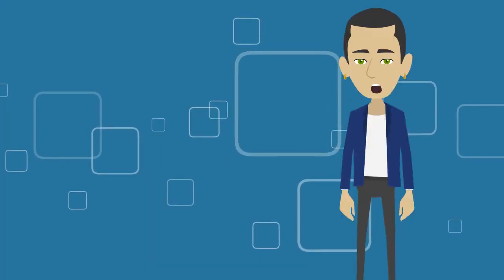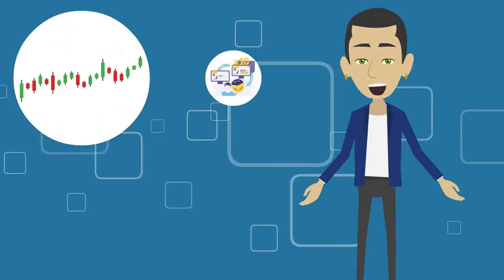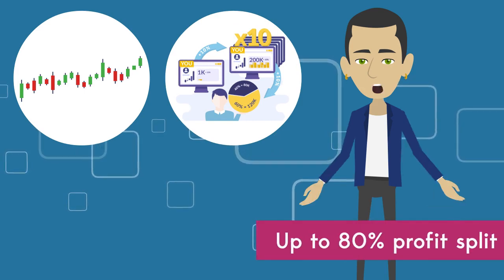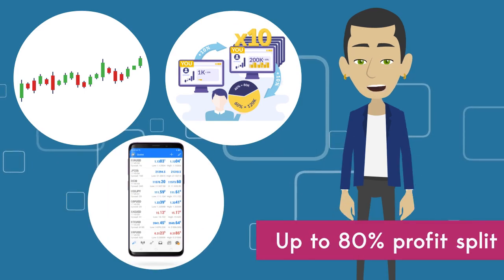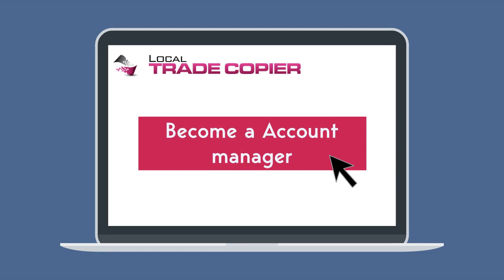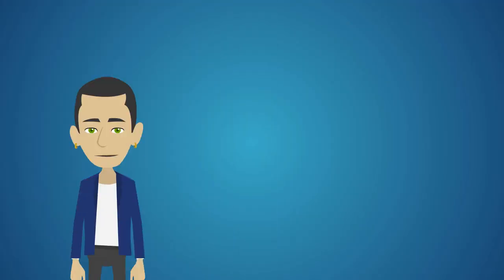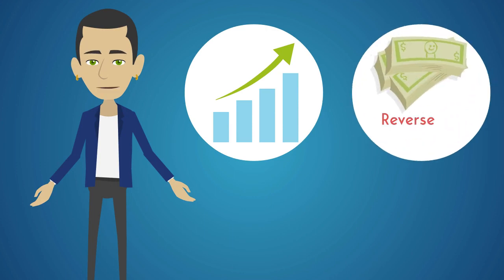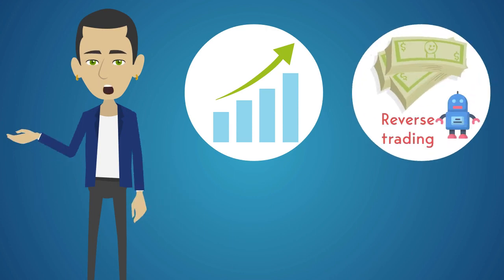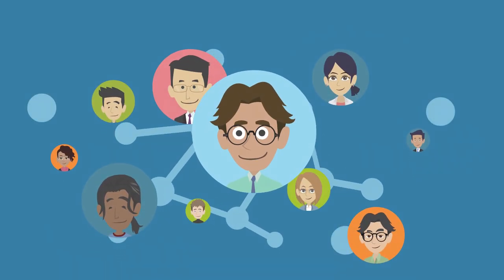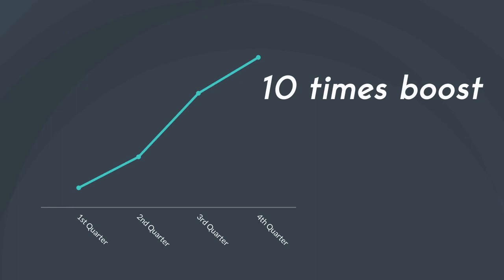We also bring the explicit option for you to trade Forex on multiple prop firm trading accounts for up to 80% profit split from your mobile MT4 or MT5 phone app. In addition, we satisfy your needs with the distinctive offer to become a private and independent account manager. We make your trading game strong by allowing you to make money by reverse trading a losing Forex robot or a failing trader and sharing Forex trades with friends, family, and clients, giving a 10 times boost to your profits.